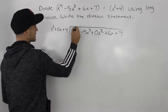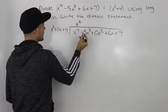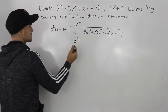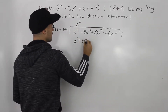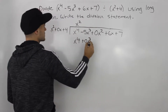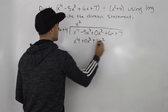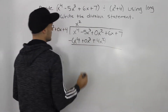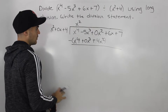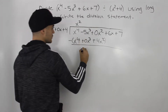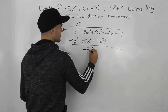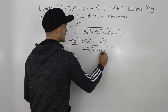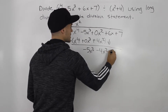So how many times does x squared go into x to the 4? Well, x squared times x squared is x to the 4. x squared times 0x would give us 0x cubed. x squared times 4 gives us 4x squared. And now we can subtract everything. x to the 4 minus x to the 4 is 0. Negative 5x cubed minus 0x cubed is negative 5x cubed. 0x squared minus 4x squared gives us negative 4x squared.